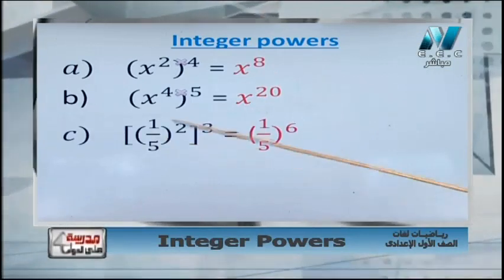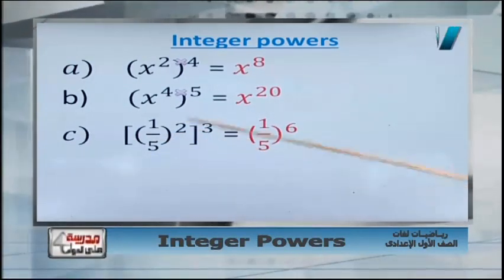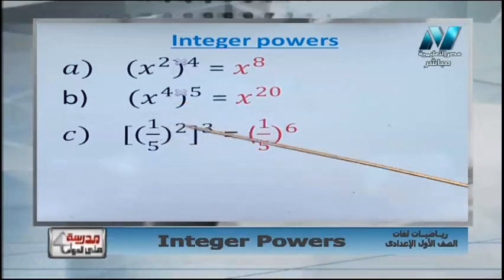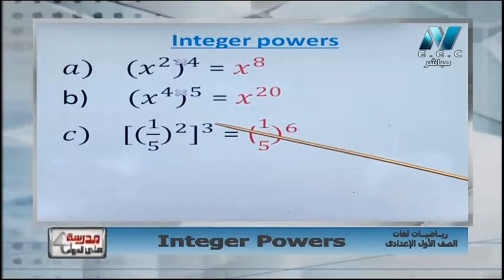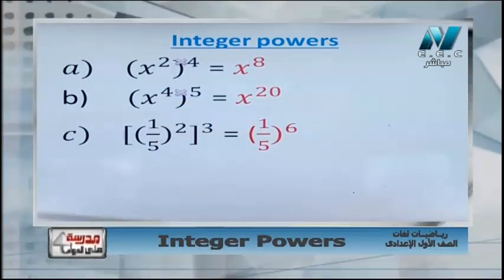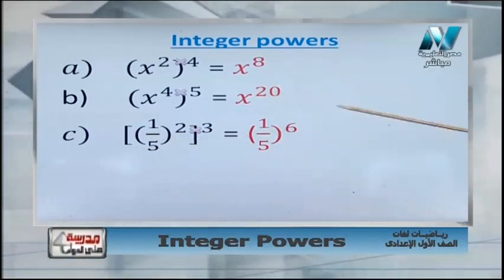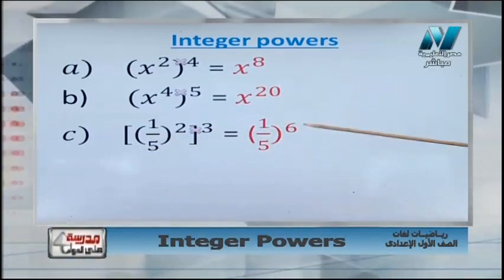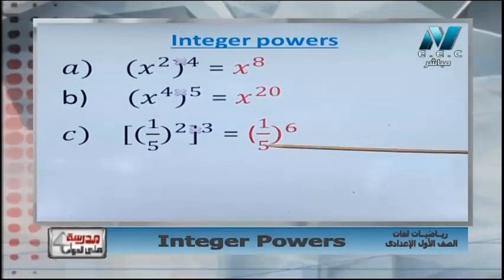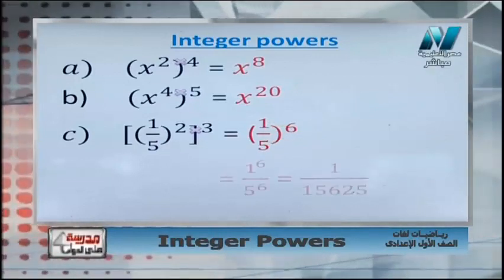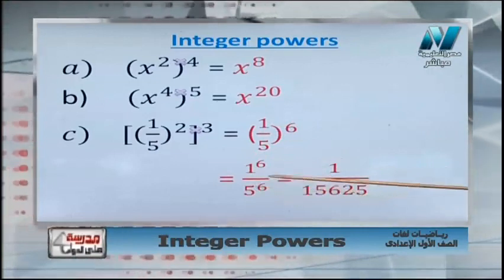Here we have a rational number: 1 over 5, all to the power 2, all to the power 3. The first power is 2 and the second power is 3. Power of the power — multiply them: 2 times 3 equals 6. Continue your steps: 1 over 5, all to the power 6. Distribute the power over the numerator and denominator — over 1 and over 5 — so it will be 1 power 6 over 5 power 6.